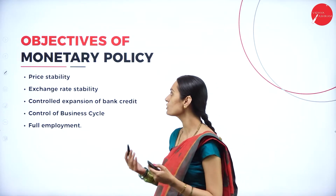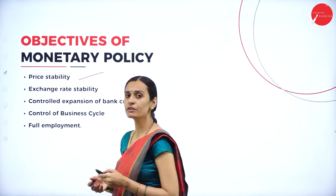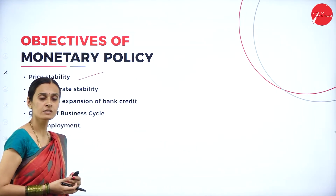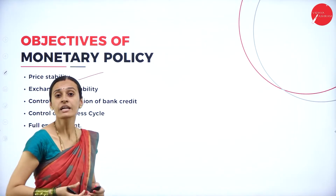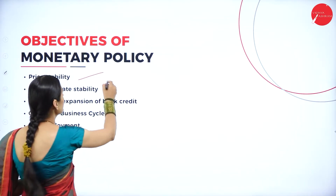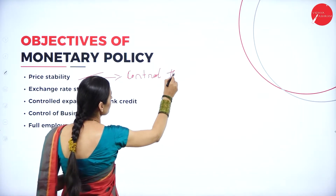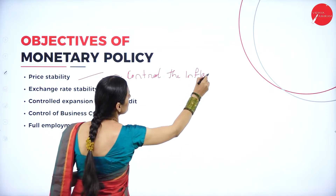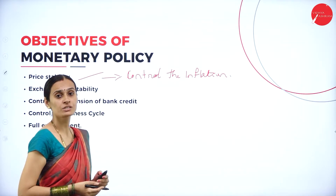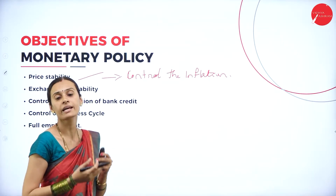Let us discuss the different objectives of monetary policy. The first one is price stability. Inflation or deflation is a common phenomenon — that is, rising in the general price level in the economic system, decreasing in the value of money, and increasing the supply of money, which leads to inflation. To control the inflation pressures or deflation situations is considered as stability in the economic system.